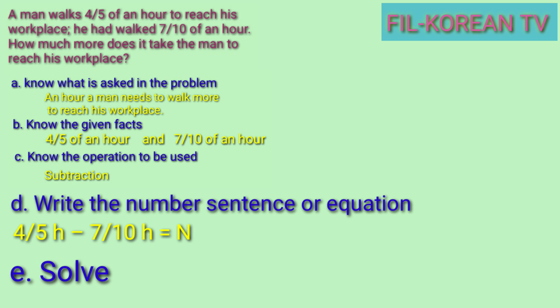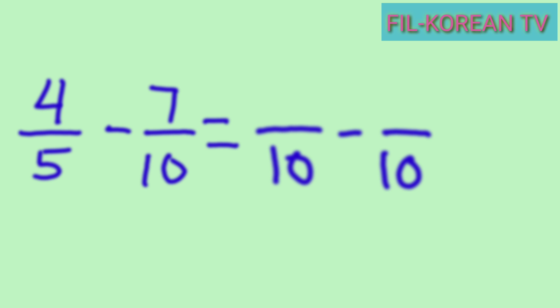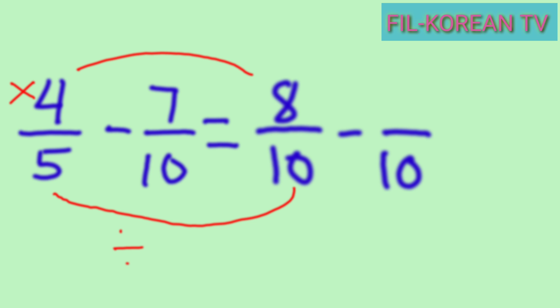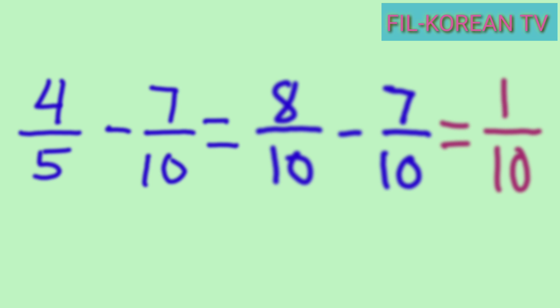Now let's solve. Four fifths minus seven tenths — these are dissimilar fractions, so we need to change them to similar fractions first. We get the LCD of 5 and 10, which is 10. Then: 10 divided by 5 equals 2, times 4 equals 8. And: 10 divided by 10 equals 1, times 7 equals 7. Now the fractions are similar. Subtract the numerators: 8 minus 7 equals 1. Copy the LCD: 10. The answer is 1 tenth.